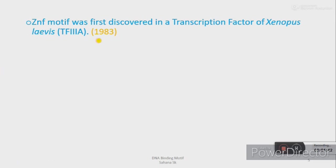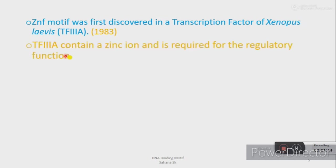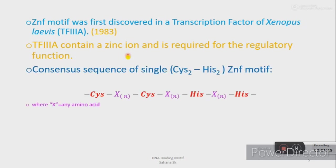In 1988, the zinc finger motif was first discovered in a transcription factor, TFIIIA, of Xenopus laevis. For the regulatory function of TFIIIA, it must contain a zinc ion — they found this back then. The consensus sequence of a single C2H2 zinc finger motif — two cysteines and two histidines — is as follows.